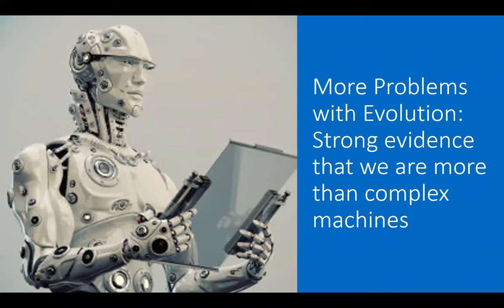Another problem with evolution is that the best theories which account for all observed human behavior and thought strongly support the idea that we are more than complex machines. Earlier in the first part of this lecture, I talked about how one of the underlying assumptions behind evolution is this idea that humans are nothing more than complex machines. But we have strong evidence that we are indeed more than complex machines. This debate will continue as the line between humans and machines becomes more and more blurred in the coming years, but it is important that we hold to the truth that humans are more than highly advanced biological machines.